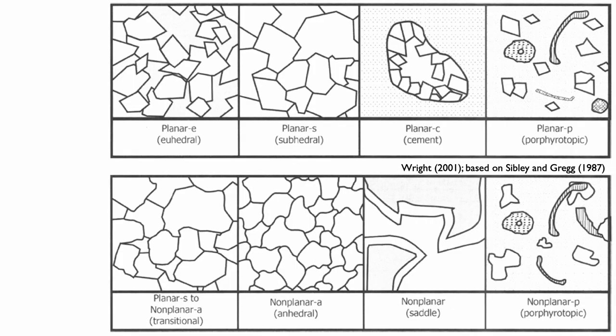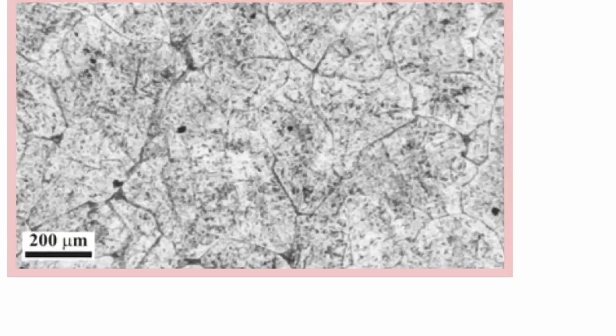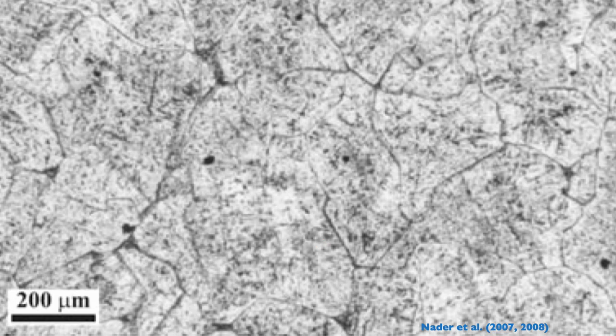Let's look at a few examples, starting with the transitional dolomite. This is a nice example: you can recognize some mineral planes and some areas that are sort of subhedral, but there are also a lot of areas that are anhedral where you really cannot see any plane of minerals. So that's a transitional dolomite.